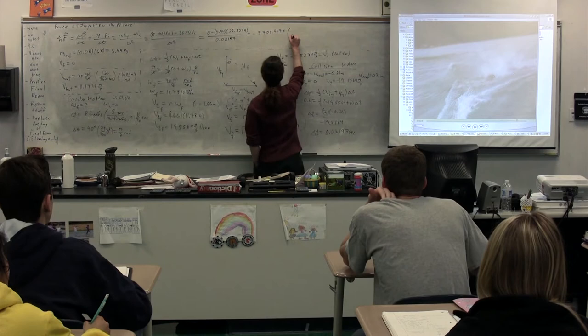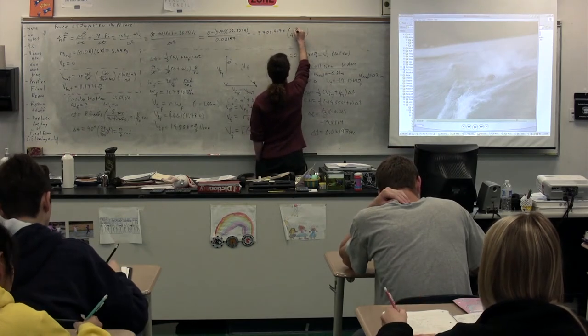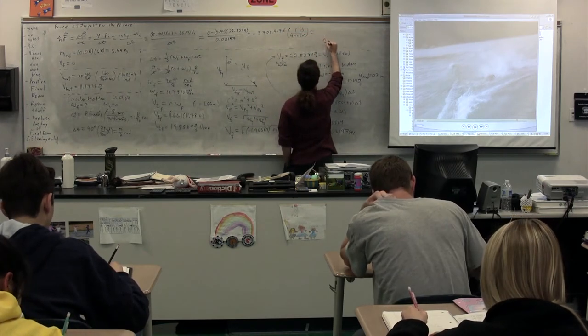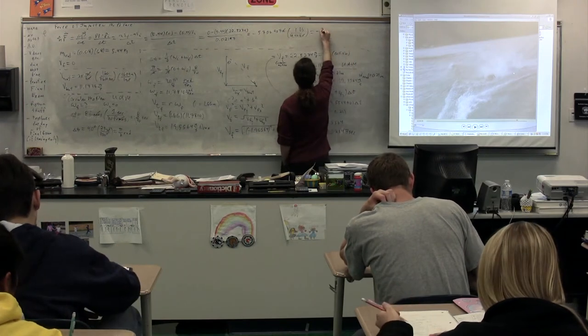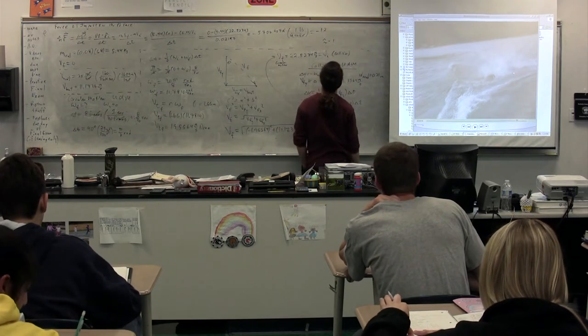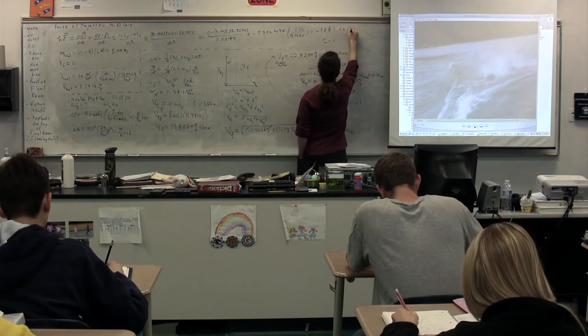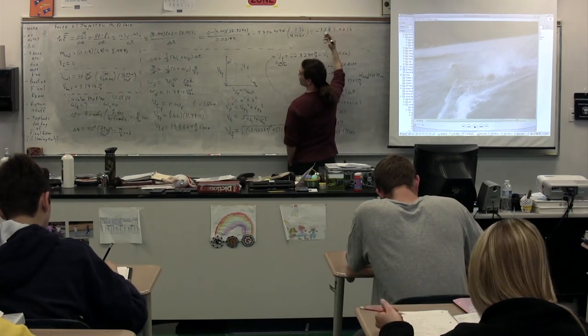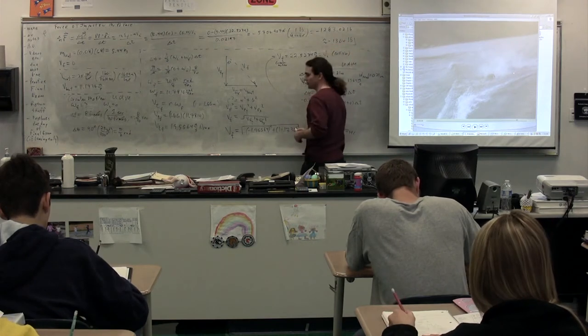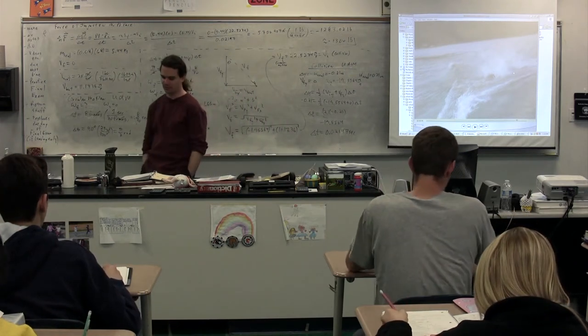Now, this in newtons is not very helpful, so let's convert to pounds. 4.448 newtons is one pound. Newtons cancel out, and we're going to get this in terms of pounds. Great. That's in pounds. With sig figs, we'll just use two sig figs. Seems like a good approximation. 1,300 pounds. 1,300 pounds of force on Mr. Palmer's face.